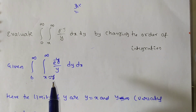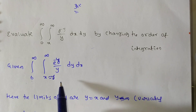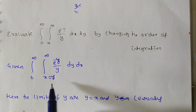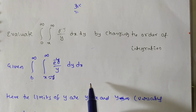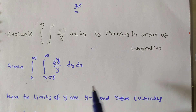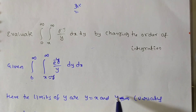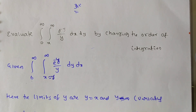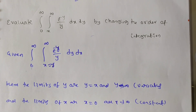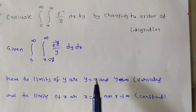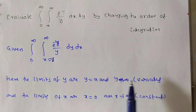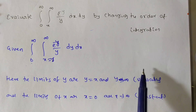While solving this problem in an exam, write step by step. First, write the given limits. Then, to change the order of integration, the variable limits of y are changed into constant limits, and the constant limits are changed into variable limits. Draw the graph, find the region, and then simplify the integration. The limits of y are x and infinity, so y = x and y = infinity.